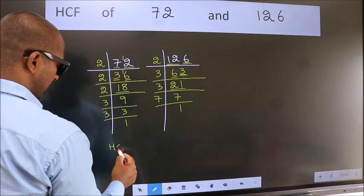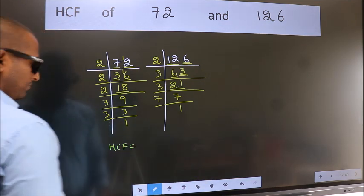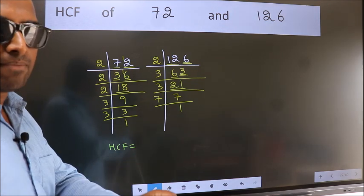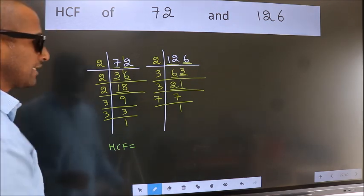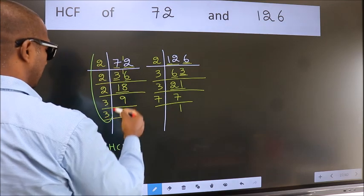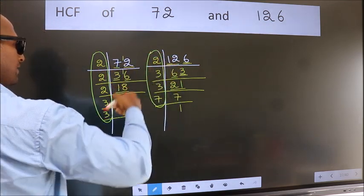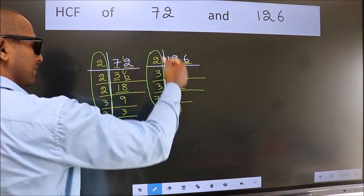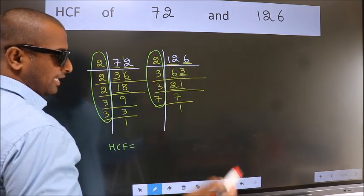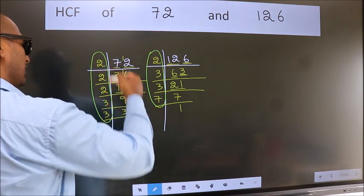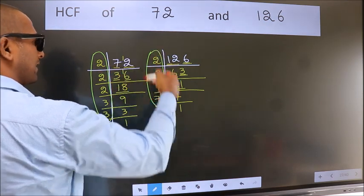Therefore, our HCF is the product of the numbers which should be present over here and also here. Here and here. So, now let us find the numbers which should be present here and here.